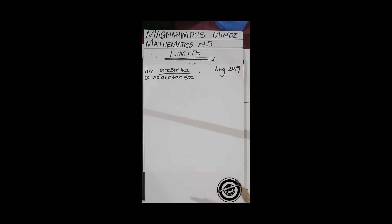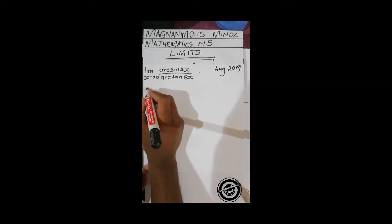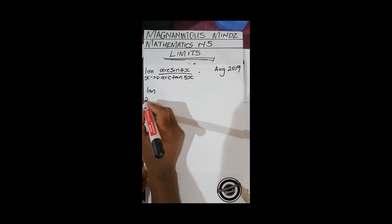We are given the limit as x approaches zero of arc sine 4x over arctan 5x. If we try to directly substitute in this case, we'll realize that we're going to get something which is undefined. For that reason, we're going to make use of l'Hôpital's rule, whereby we're going to differentiate the numerator and also the denominator.